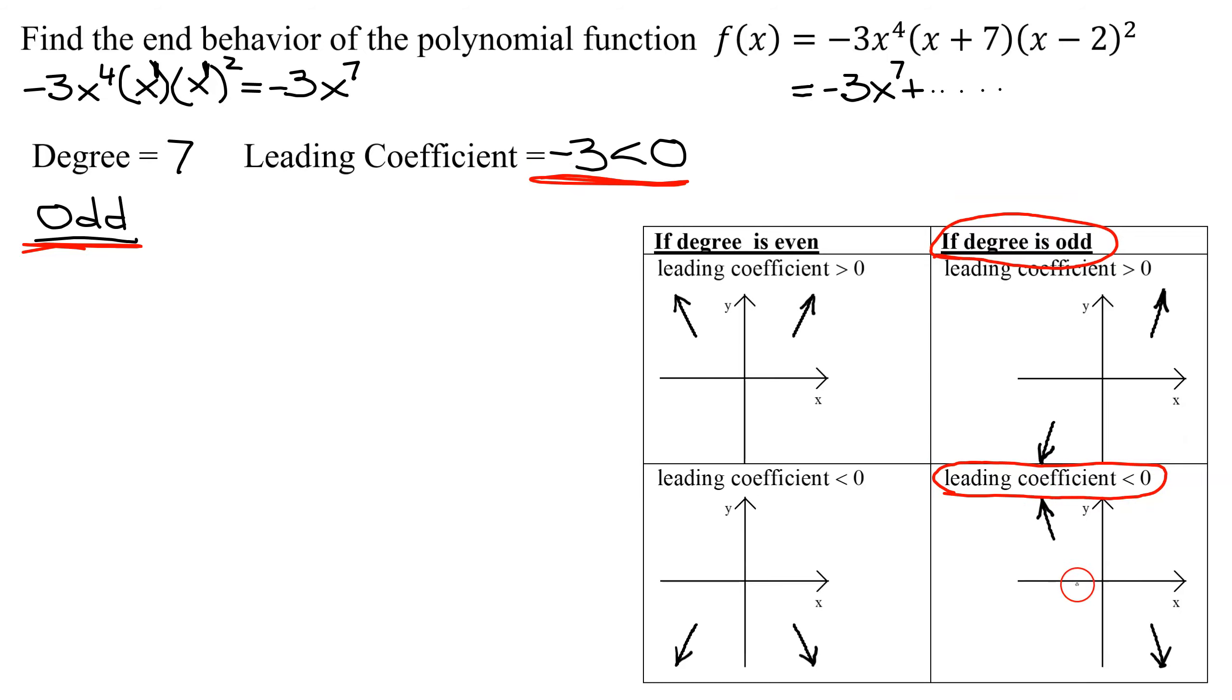So what does the end behavior do? It rises to the left and then it falls to the right. So the end behavior for this polynomial function is rises to the left and falls to the right.